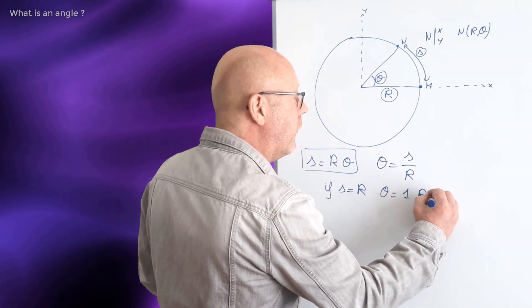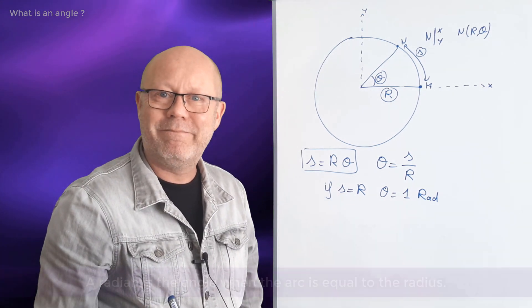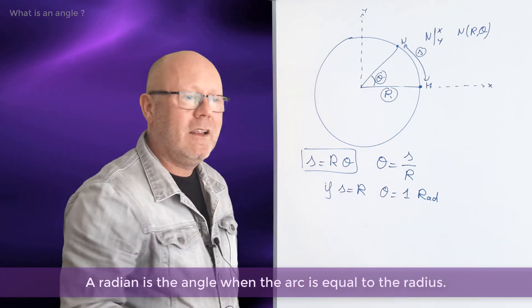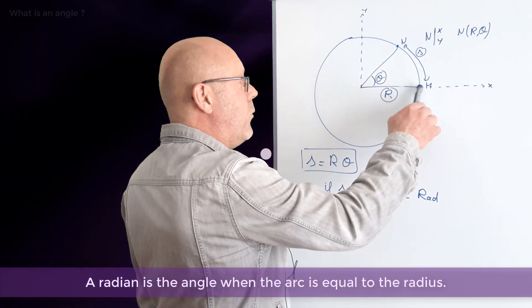One radian. That is the definition of the radian. A radian is the angle covered by an arc, s, when it is equal to the radius.